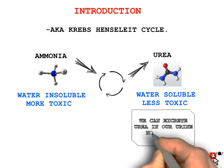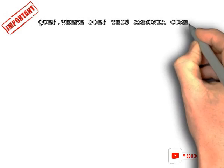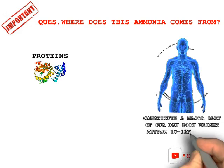Now, before getting on to the topic of how ammonia is converted to urea, it is very important for us to understand some concepts. The question arises: where does this ammonia come from? Proteins are the most abundant organic compounds and constitute a major part of dry body weight, which is about 10–12 kg in a human adult.